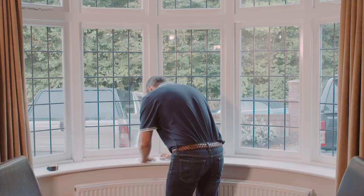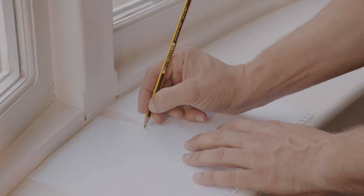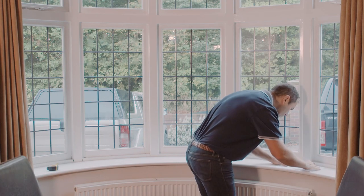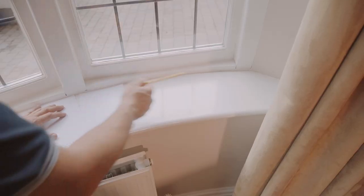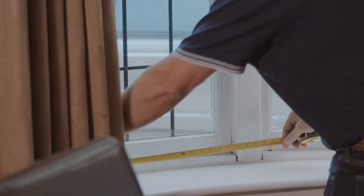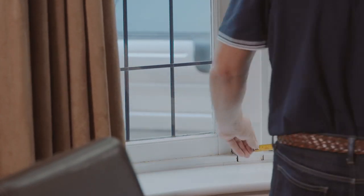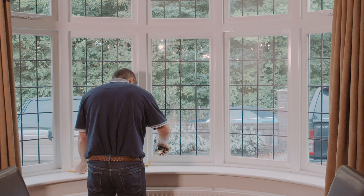Do this for all the angles on your bay, and once you're done, make a mark where you want the outermost blinds to finish. So now we've established where each blind will finish, we just need to get our tape measure out and make a note of each width.